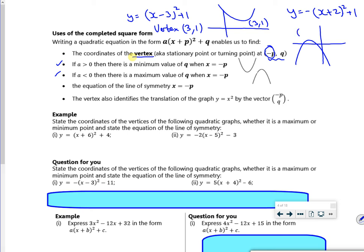So the vertex there, which is now a maximum point, will be at (-2, 1). So change the sign on that one, keep the sign and we're done.